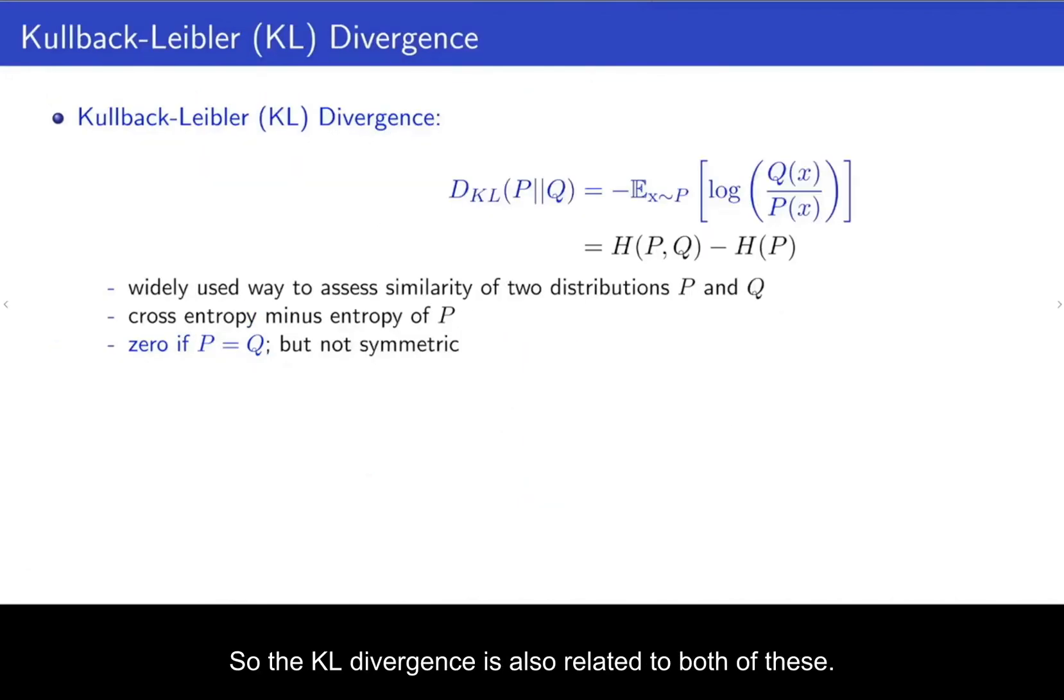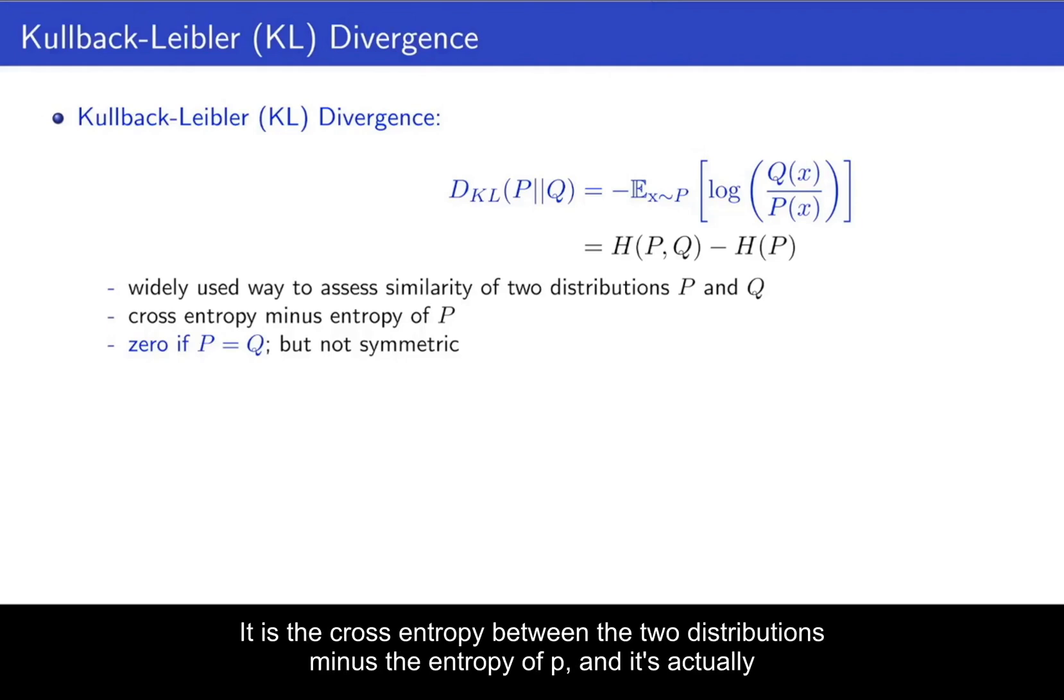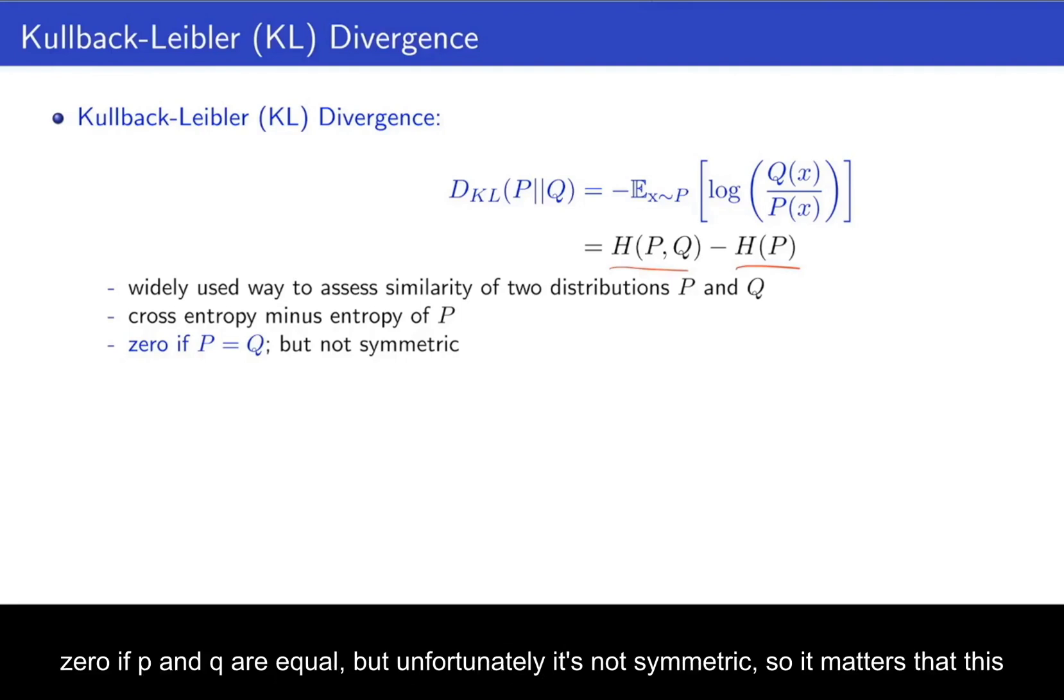So the KL divergence is also related to both of these. It's a widely used way to assess the similarity of two distributions in machine learning, such as distributions P and Q. It is the cross-entropy between the two distributions minus the entropy of P. And it's actually 0 if P and Q are equal. But unfortunately, it's not symmetric. So it matters that this here is P comes first and then Q, because...